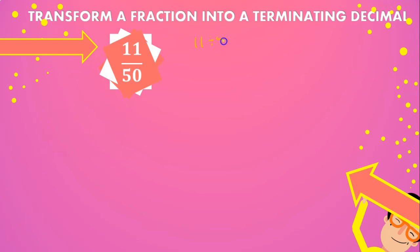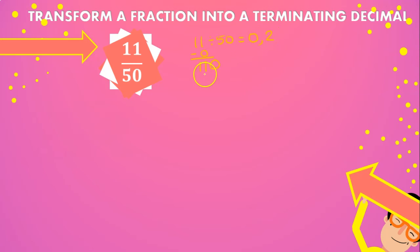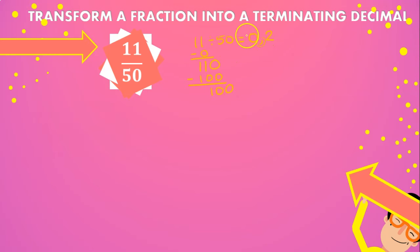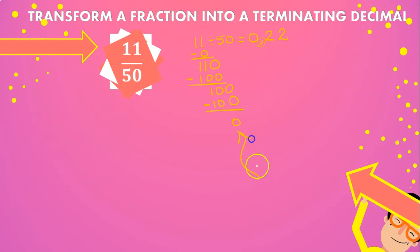So 11 divided by 50 — that's going to be 0. 0 times 50 is 0. Then we add a decimal, so that's 110 divided by 50, which is 2. 2 times 50 is 100. We subtract and that gives us 10. Then we add a 0 because the decimal point is already here. So 100 divided by 50 is 2. 2 times 50 is 100. When we subtract, we get a remainder of 0.